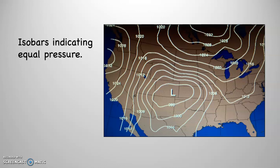We already saw this map one time before — now let's take a closer look at it. There are isobars indicating equal pressure on this map. Right in the middle, in the southeastern corner of Colorado, you can see that L — low pressure. With low pressure, the air is converging, rising, making clouds, and probably precipitation. Notice the isobars going around the L — these are in millibars. Remember, 1013 millibars is average pressure at sea level, the same as 14.7 pounds per square inch or 29.92 inches of mercury. The first ring around the L is 996 millibars, then 1000, 1004, 1008, 1012, 1016, 1020, 1024, and so on — every four millibars.